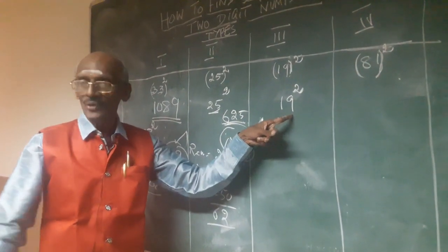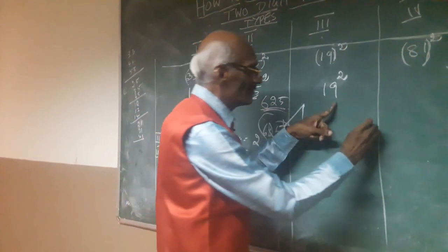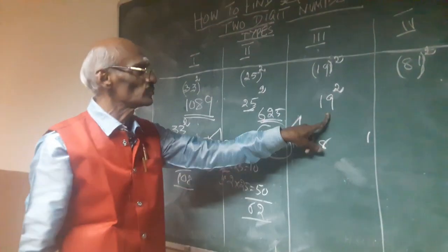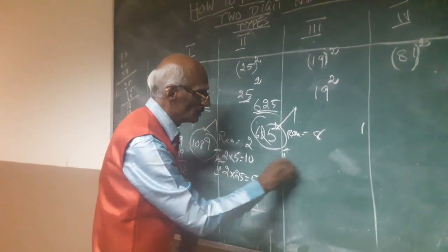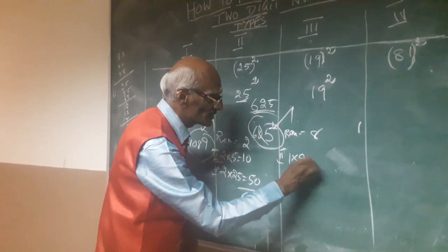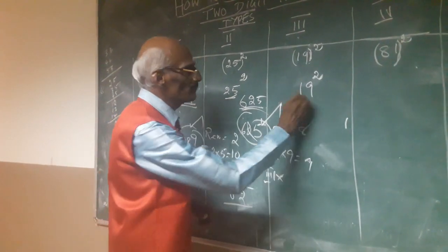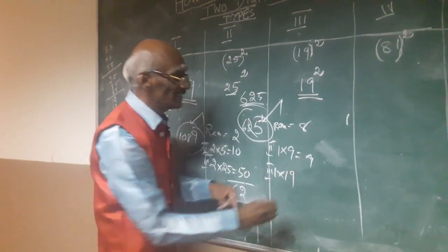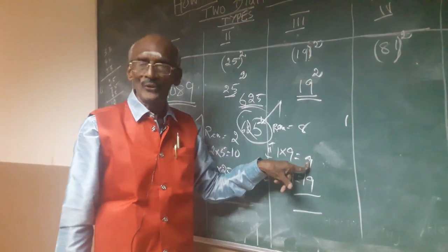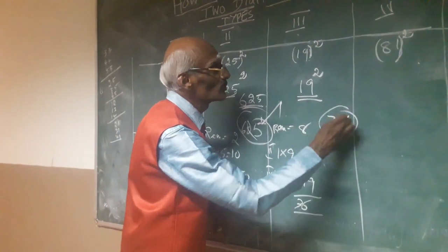Now the third type: 19 squared. Step one: take the last digit 9. Nine into nine equals 81. Write the 1 here; the remainder is 8. Step two: multiply the first digit by the second digit — 1 into 9 equals 9. Step three: take the first digit 1 and multiply by the two-digit number 19 — 1 into 19 equals 19. Find the total: 19 plus 9 equals 28, plus 8 (remainder) equals 36. Write this value here — 36.